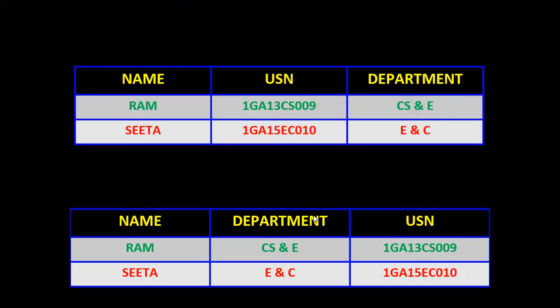However, we cannot move or change the order of a value from one tuple to another tuple — for example, moving Bollywood from the first row to the second row is not allowed in a relation. But when moving a value from one column to another column, we must move the values along with the heading. This is the second characteristic of a relation.